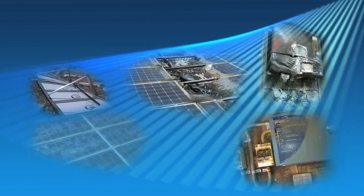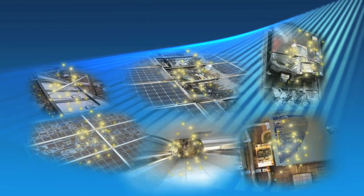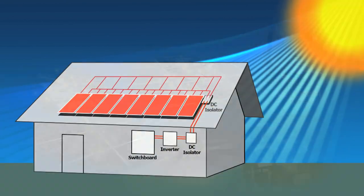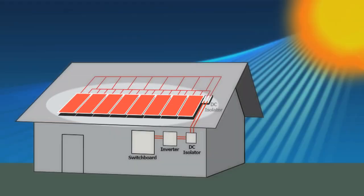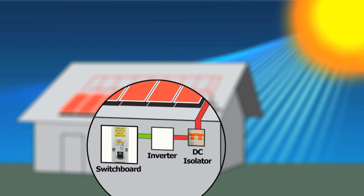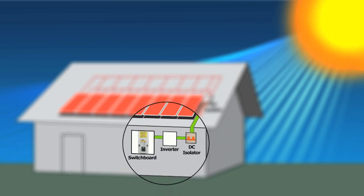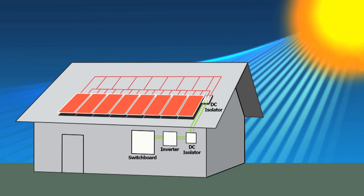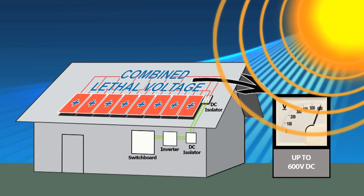One of the most pressing issues involves the safe isolation of these systems. Currently, the standard practice for the isolation of solar panels is to switch off the incoming AC supply and then turn off the DC isolator. Even by following this procedure, lethal voltage is still being generated throughout the panels, up to 600 volt DC, whenever the sun is shining.